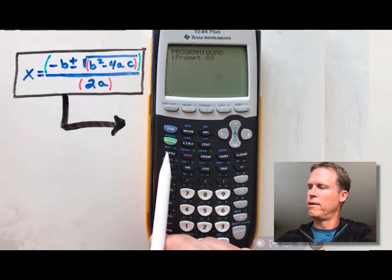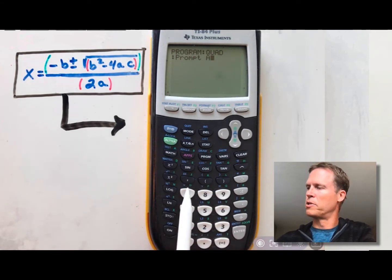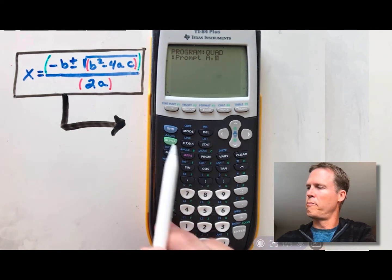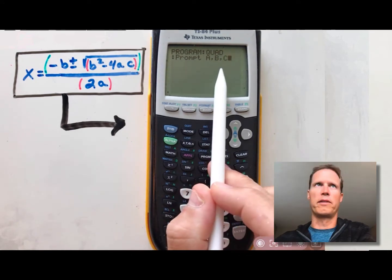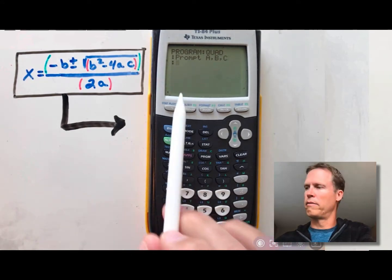So we're going to press alpha A, math, then go comma, which is above the 7, then press alpha B, comma, and then alpha C. You've now prompted the user to enter those three things in. Press enter so you're on a new line of code.